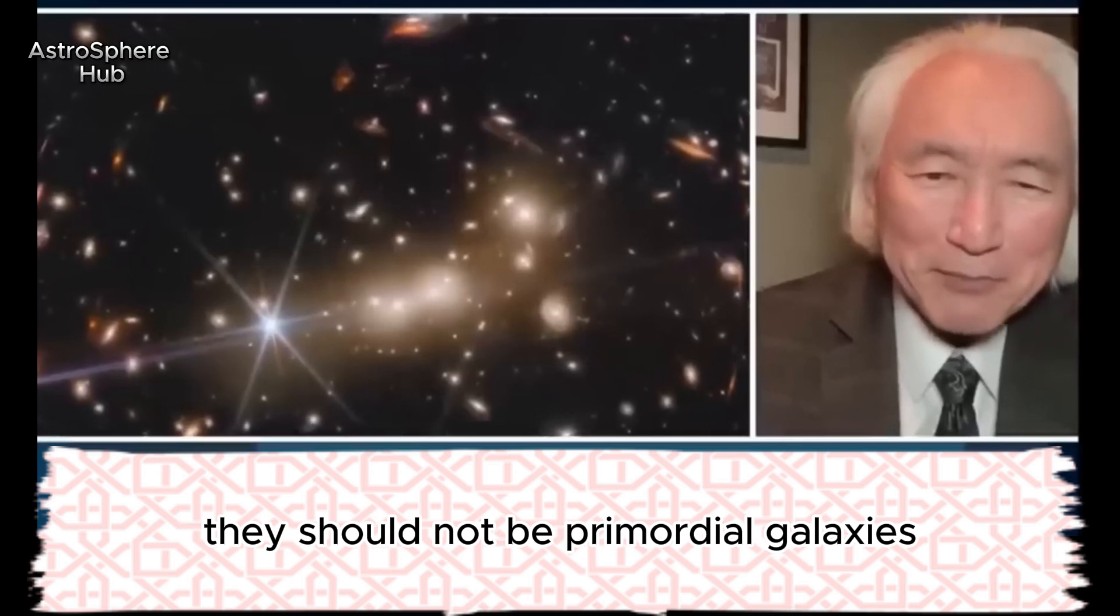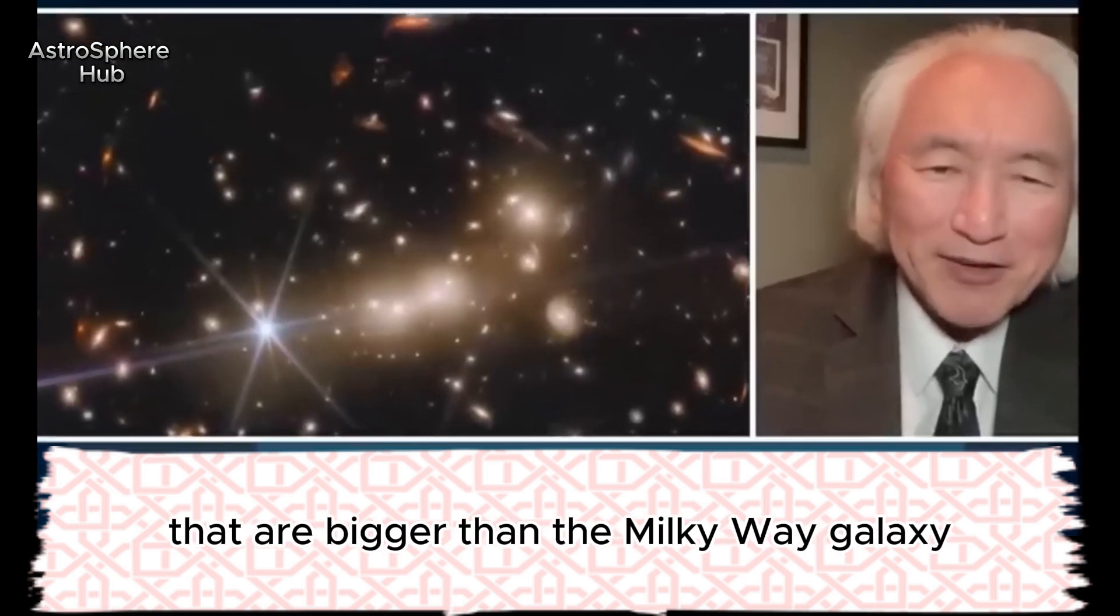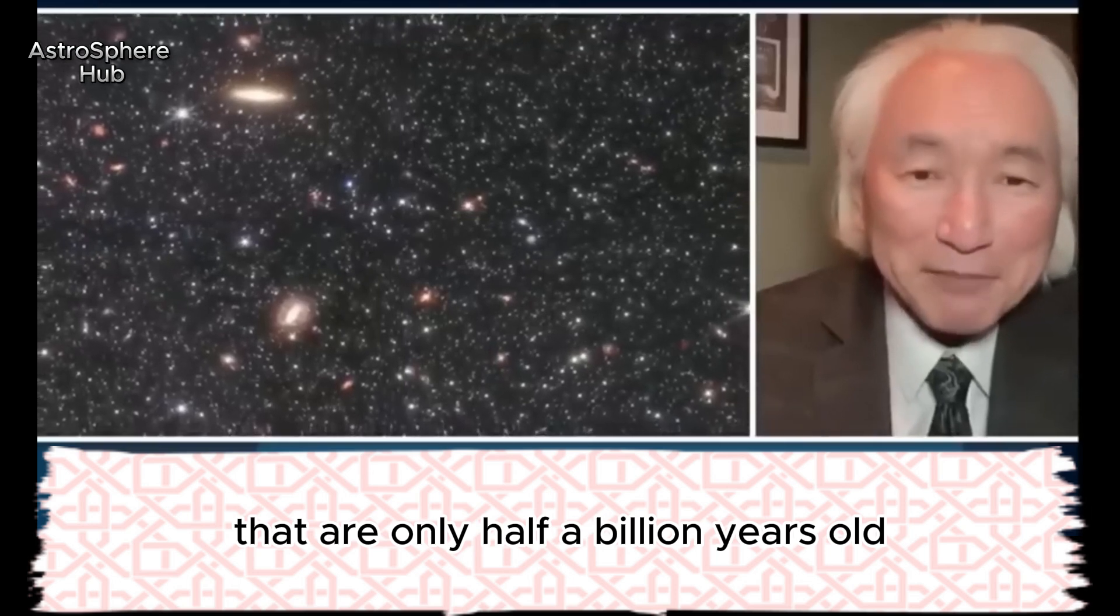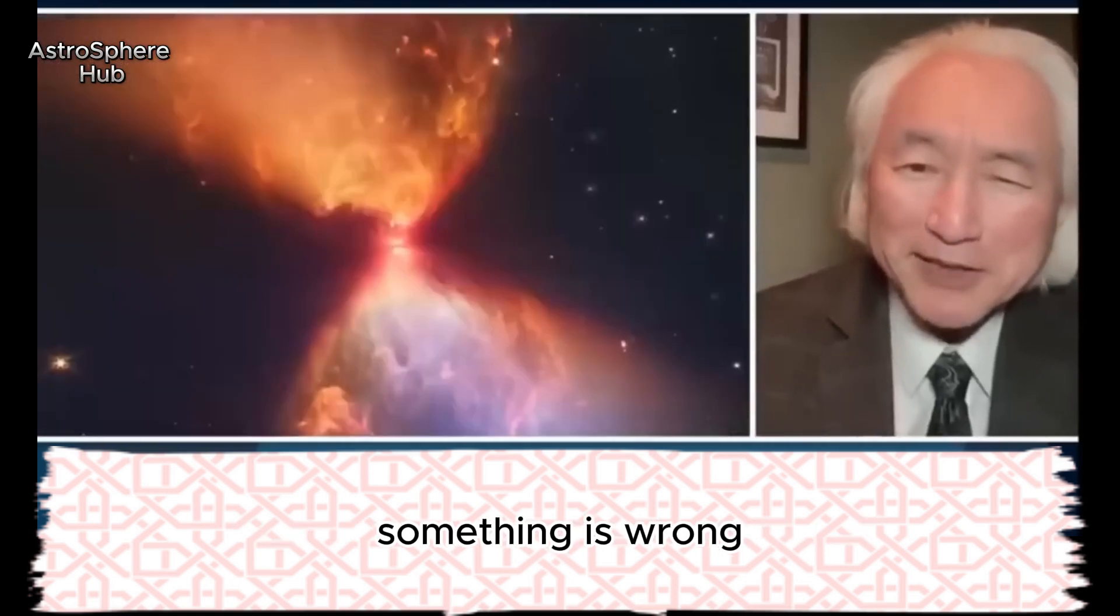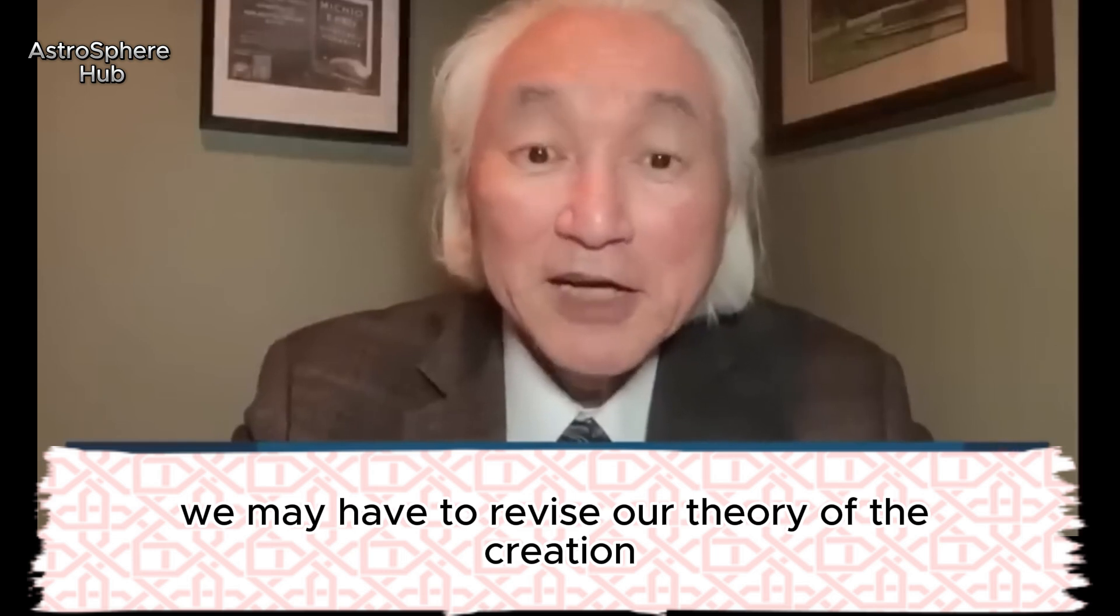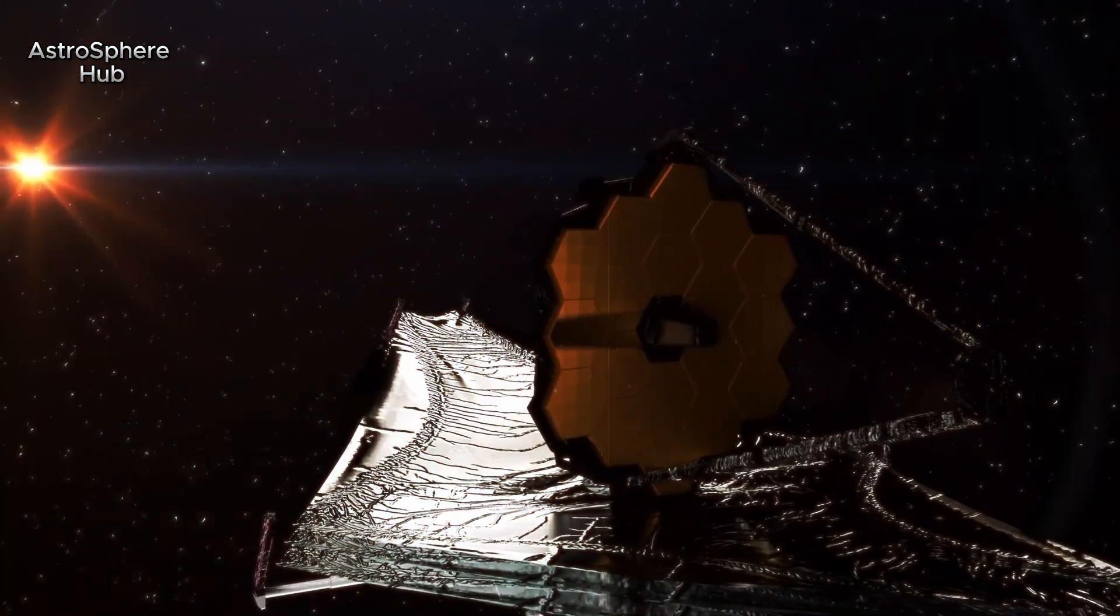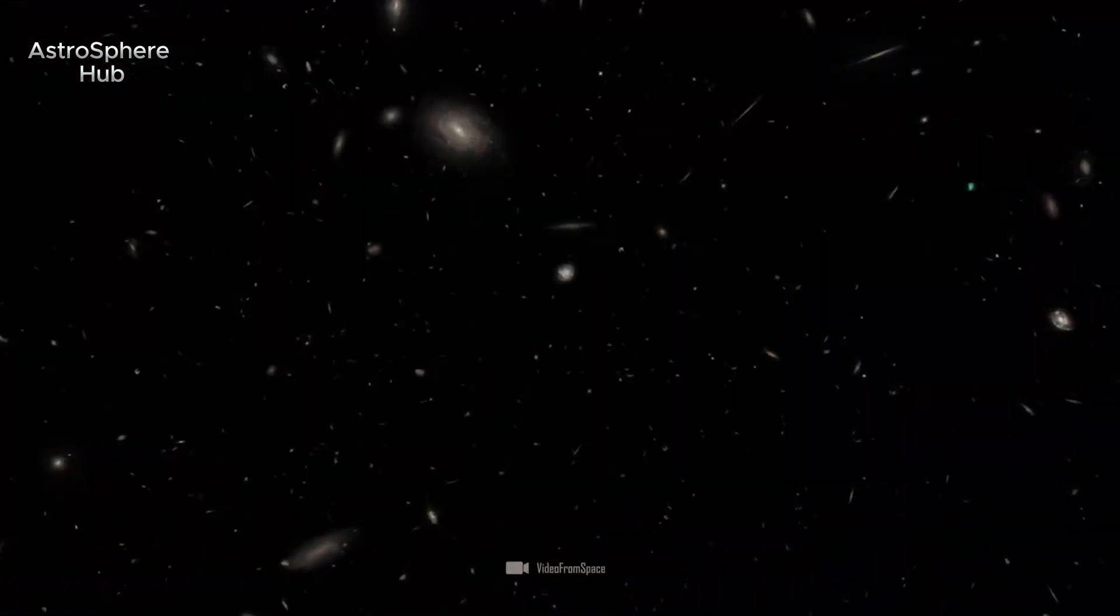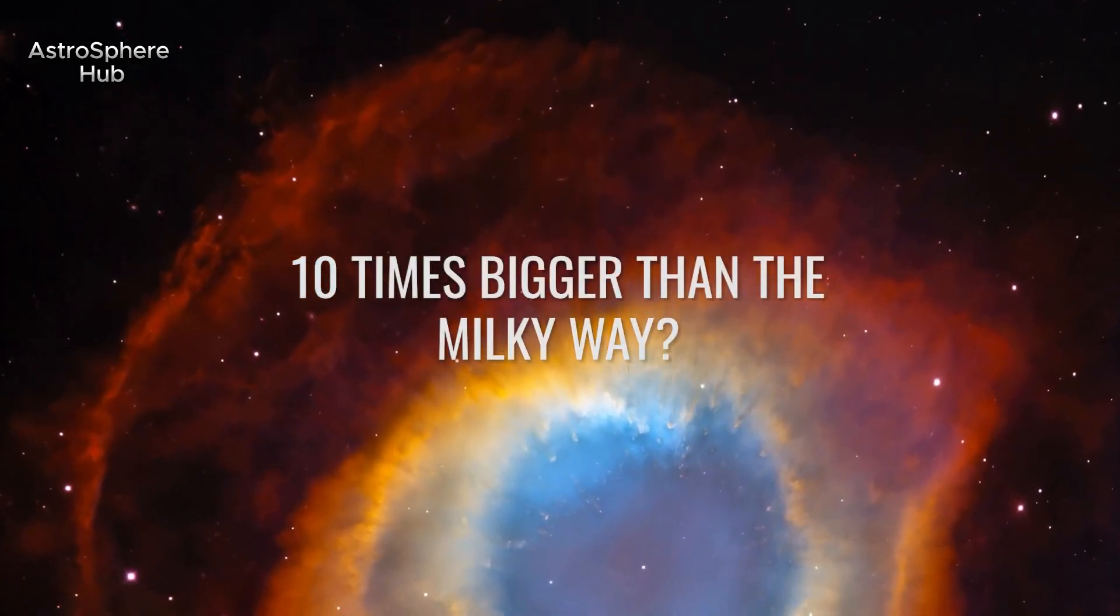There should not be primordial galaxies that are bigger than the Milky Way galaxy that are only half a billion years old. Something is wrong. We may have to revise our theory of the creation of the universe. But the James Webb Telescope has identified six galaxies that exist half a billion years after the Big Bang and are up to 10 times larger than the Milky Way.